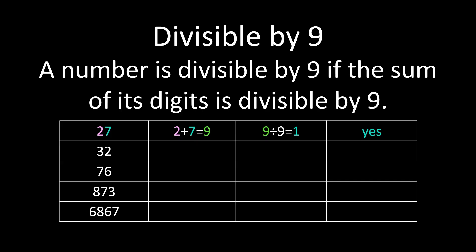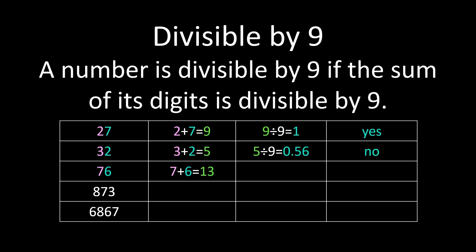With 32, we take our digits, the 3 and the 2, and add them together. 3 plus 2 is 5. Since 5 divided by 9 is not a whole number, 32 is not divisible by 9. Same thing with 76: we take the 7 and the 6 and add them together to get 13. Is 13 divisible by 9? When we divide 13 by 9, we do not get a whole number answer. So 76 is not divisible by 9.